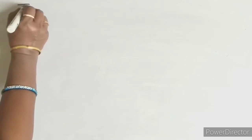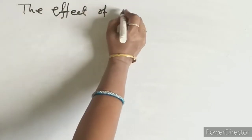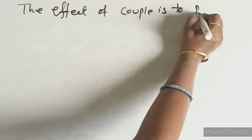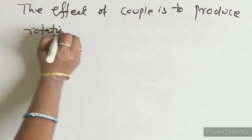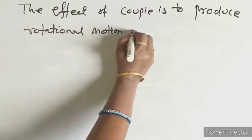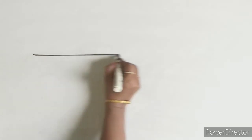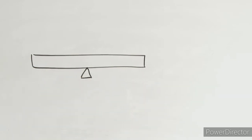The effect of couple is to produce rotational motion about a point. Let me take a pivoted body and apply the force here and here. We are talking about equal and opposite — two parallel forces opposite in direction.